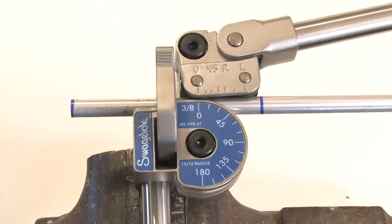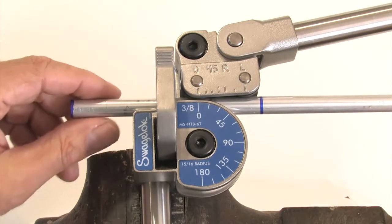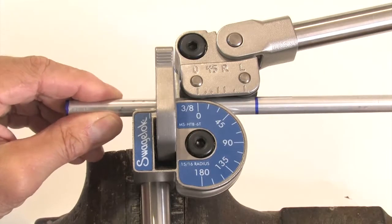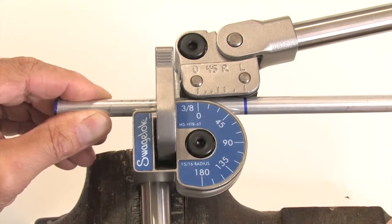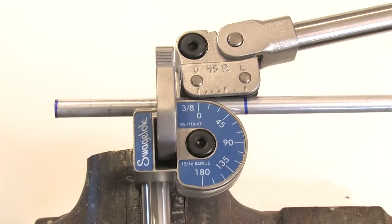Align the zero on the top scale with the zero on the degree scale. Line up the mark with the line on the top scale that matches the bend angle. For this 90 degree bend, line up the mark on the tube with the L mark on the top scale.